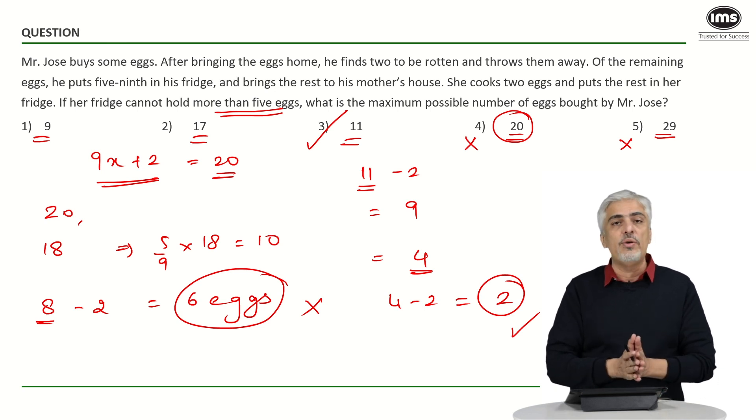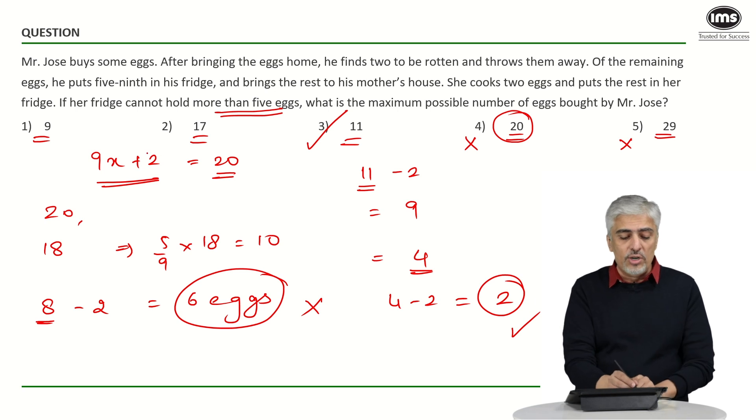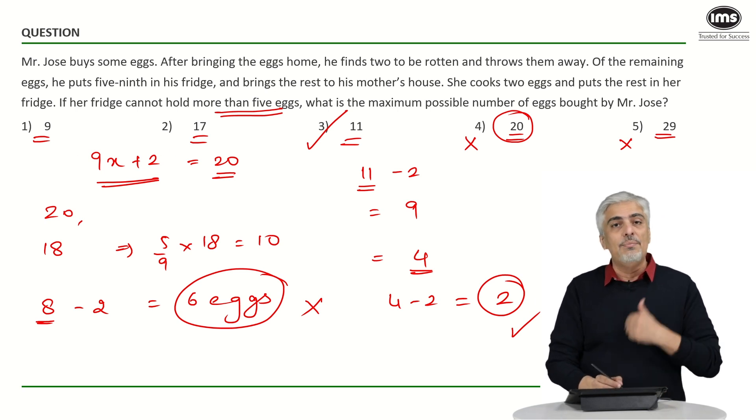A very straightforward way of doing it. This was very easy. Means even on the worst side, if you had not realized 9x plus 2 and if you had started with 9, by putting 2 eggs out, out of 9 if 2 eggs was spoiled, 7. You cannot find 5 9th of that and you would have easily eliminated first two options. So very simple way of doing this question and you could have easily done this method.